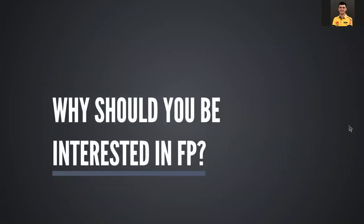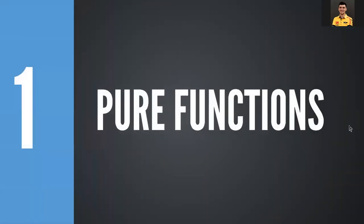Why should you be interested in functional programming? Whenever you ask any functional programmer what the main building block of any FP language is, the answer will be pure functions. Pure functions are called that for two reasons: first, for every input they always return the same output; second, they do not perform any side effects — defined as any operation that needs access to some external resource, external to the scope of the function.